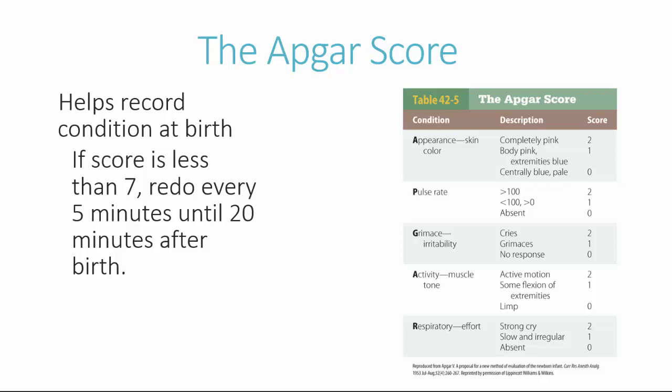The five categories are: Appearance, which includes skin color; Pulse rate; Grimace or irritability; Activity; and Respiratory effort. Ten is your maximum score with zero being the lowest. If a score is less than seven, you should redo it every five minutes until 20 minutes after birth. For appearance, if the baby is completely pink, assign a score of two. If the body is pink and the extremities are blue, assign a score of one. If the baby is centrally blue and pale, they receive a zero.